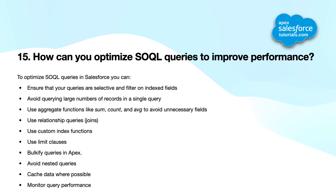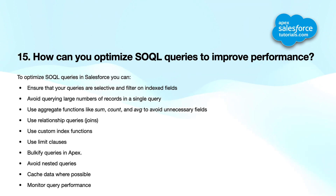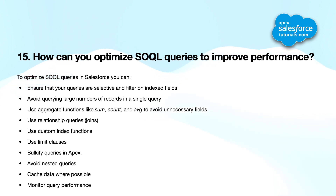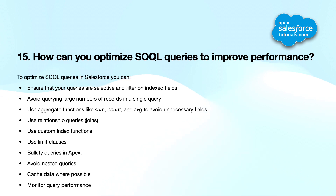Fifteenth question: how can you optimize SOQL queries to improve performance? You can: ensure queries are selective and filtered on indexed fields, avoid querying large numbers of records in a single query, use aggregate functions like SUM, COUNT, and AVERAGE, use relationship queries to avoid unnecessary fields, use custom indexes, use LIMIT clauses, bulkify queries in Apex, avoid nested queries, cache data where possible, and monitor query performance.